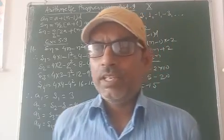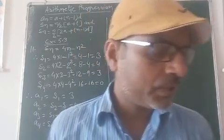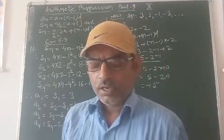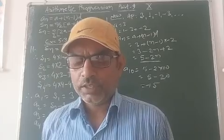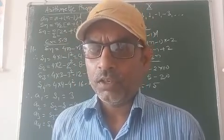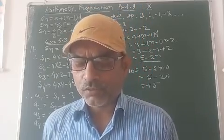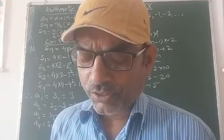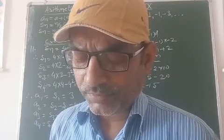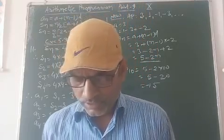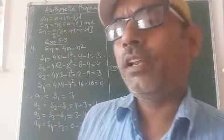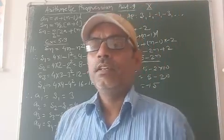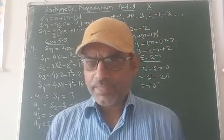So firstly, today we start Exercise number 5.3, question number 11. In question number 11, the sum of first n terms of an AP is given as 4n minus n square. So what is the first term, that is S1? What is the sum of first two terms? What is the second term? Similarly, we have to find the tenth term.